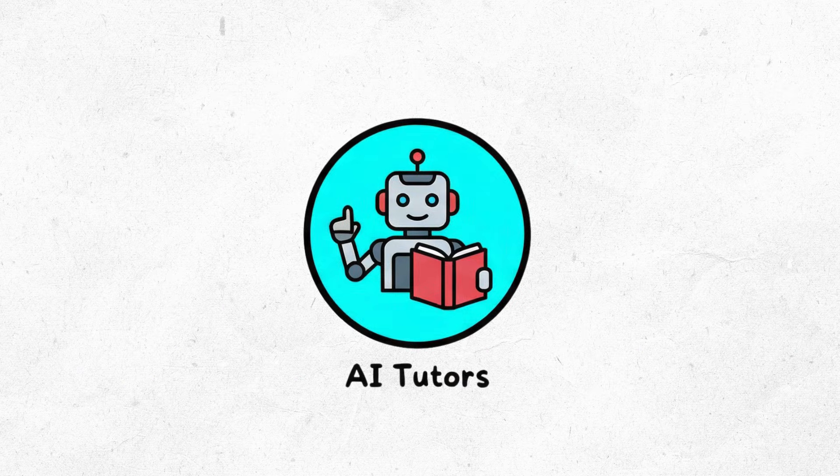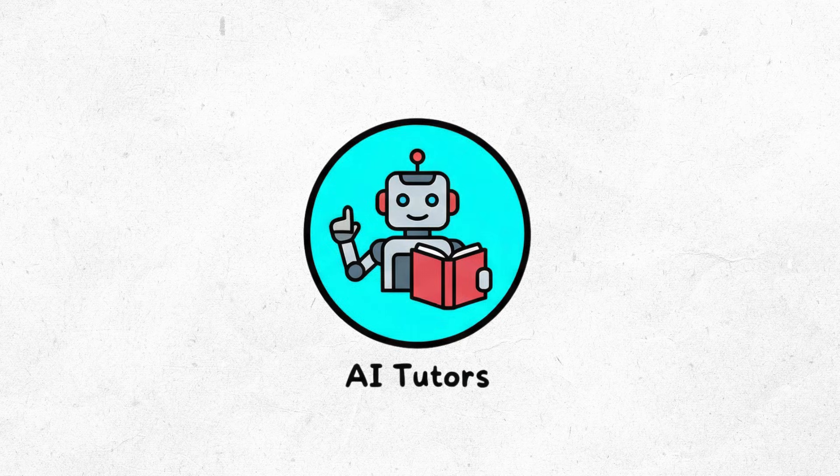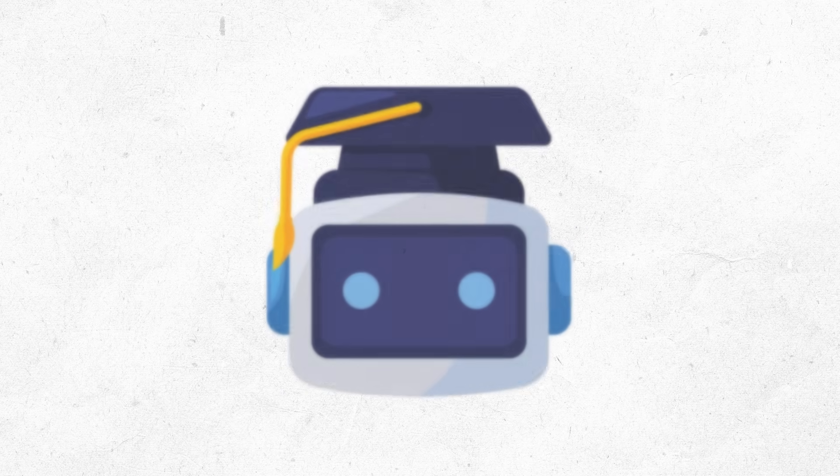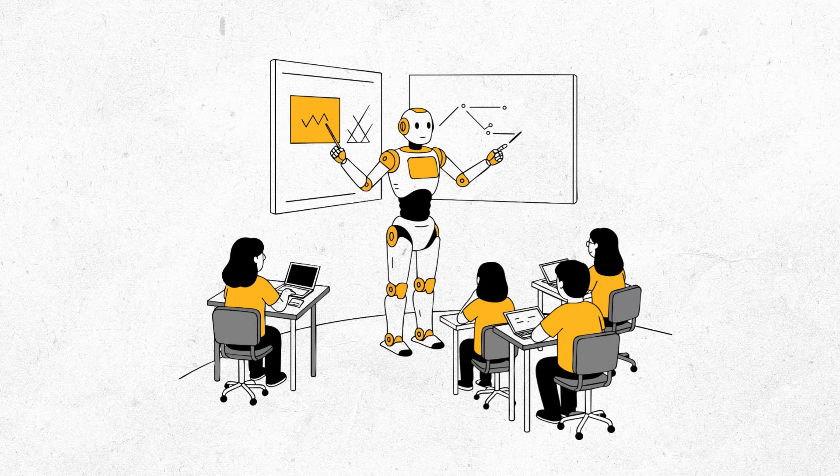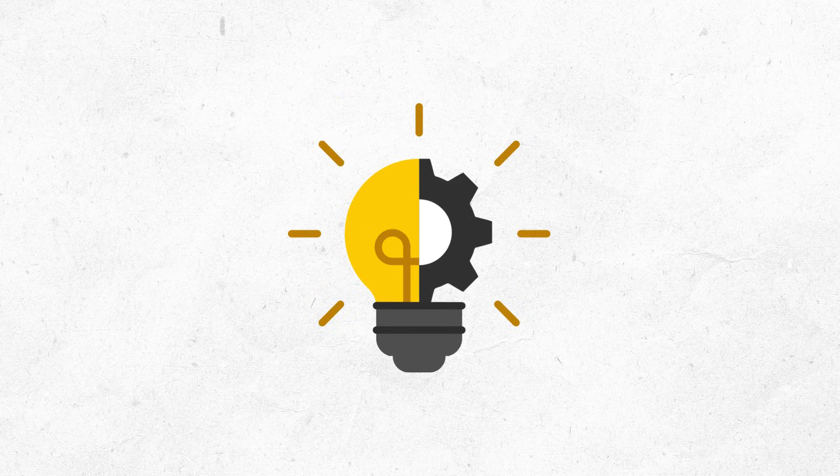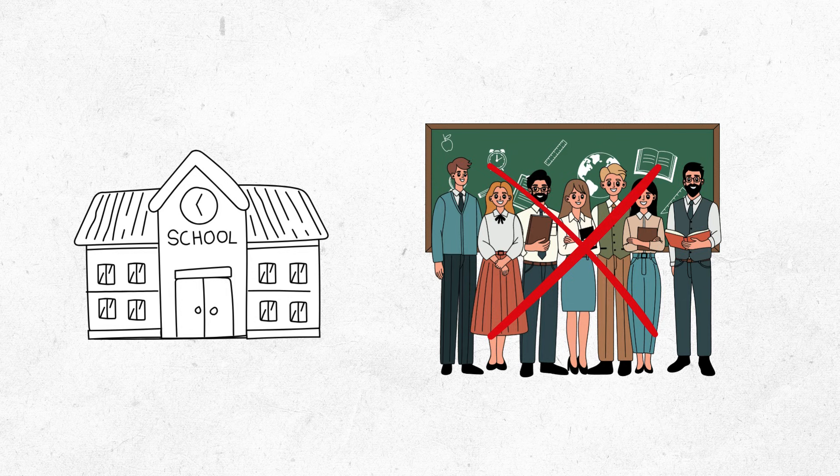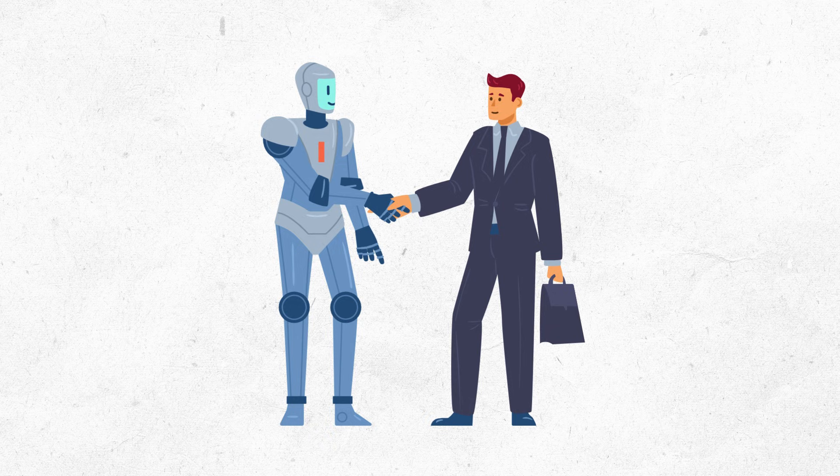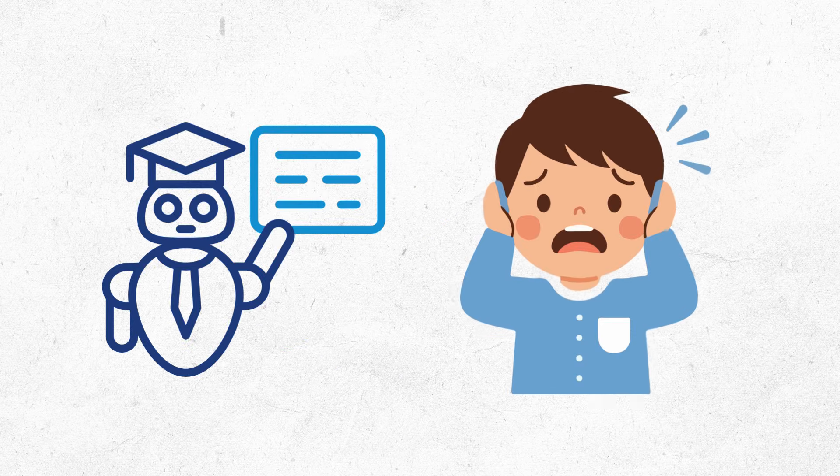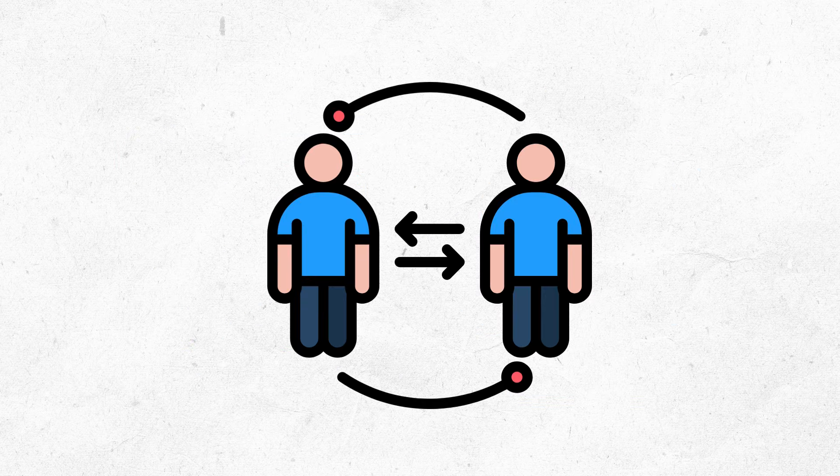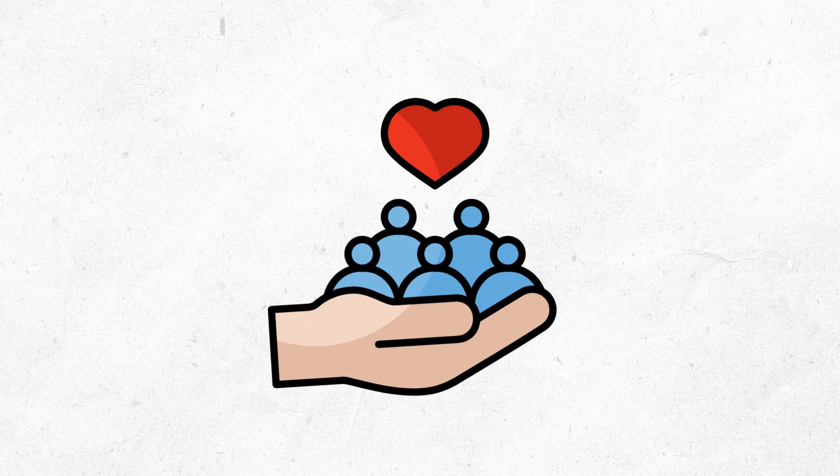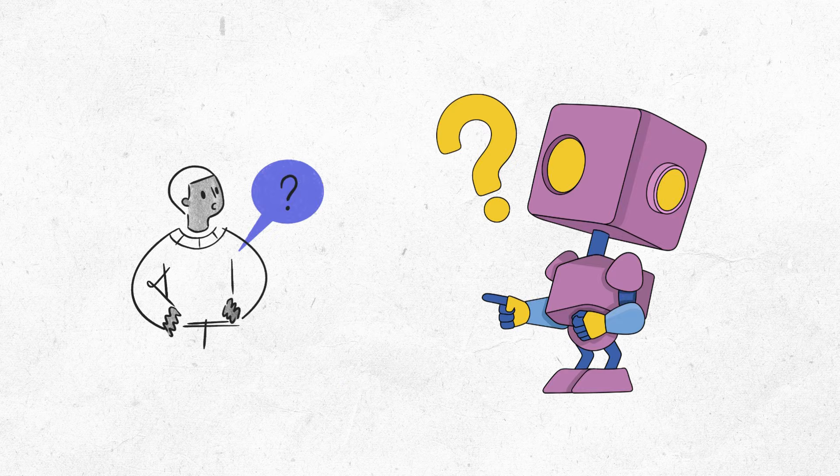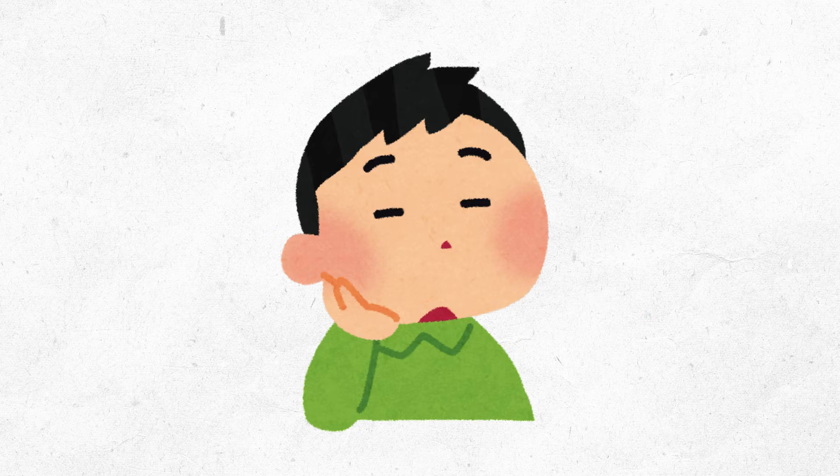AI tutors. Robots can't replace teachers. AI tutors were supposed to replace teachers completely. Every kid gets a personal robot tutor that knows exactly how they learn. Adapts to their pace. Schools won't need human teachers anymore. Companies raised millions. Schools tested it. Parents got excited about personalized education. Then reality hit. Kids don't want to learn from robots. They need human connection. They need someone who cares. They ask weird questions AI can't handle. They get distracted and need motivation.